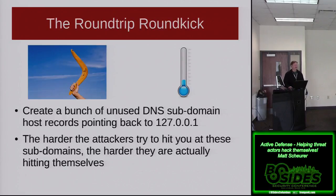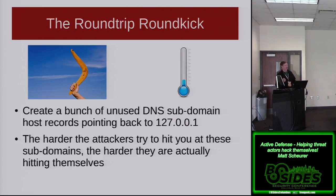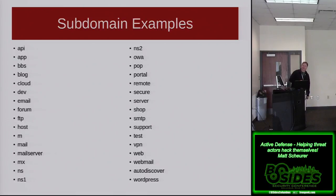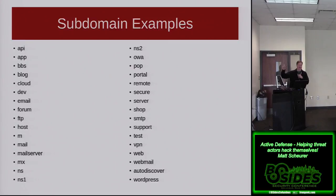The first active defense I refer to as the Round Trip Round Kick. We create a bunch of DNS subdomain host records pointing back to the loopback address of 127.0.0.1. The harder the attackers think they're hitting you, the harder they're actually just hitting themselves. Good subdomains to target include webmail, WordPress, autodiscover for Microsoft Exchange enumeration, cloud API, and mobile host. Obviously if you're actually using these in real life — like if you really have vpn.yourdomain.com — you don't want to do this. Pick and choose from the list as you see fit.